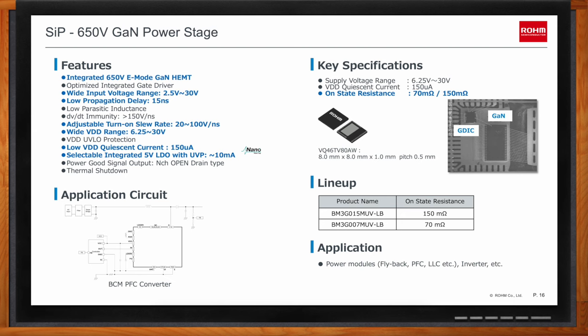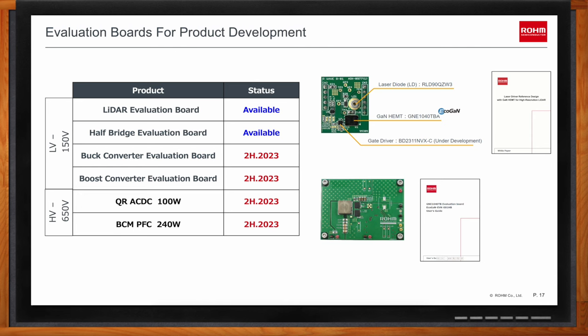If your audience wants to get started, Rome has evaluation boards to help. For low voltage, there are EvalBoards for a rider application, a half bridge, a buck converter, and a boost converter — two of these are available today with supporting documentation to accelerate product development, testing, and validation. For 650-volt GaN products, there is a 100-watt quasi-resonant AC-to-DC converter and a 240-watt boundary condition mode PFC converter.